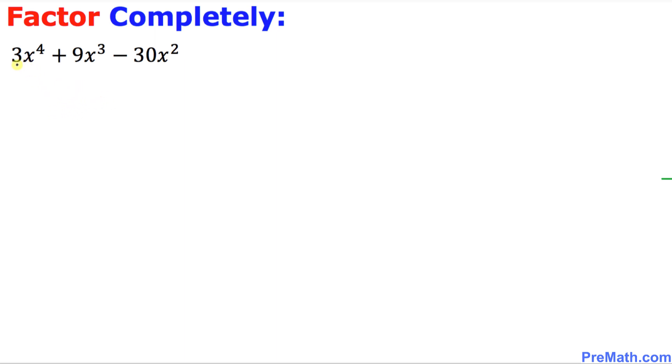As we can see, 3x square is in common among all these terms. So we can factor out 3x square. Once we factor out, we end up with simply x power 2 plus 3x minus 10.